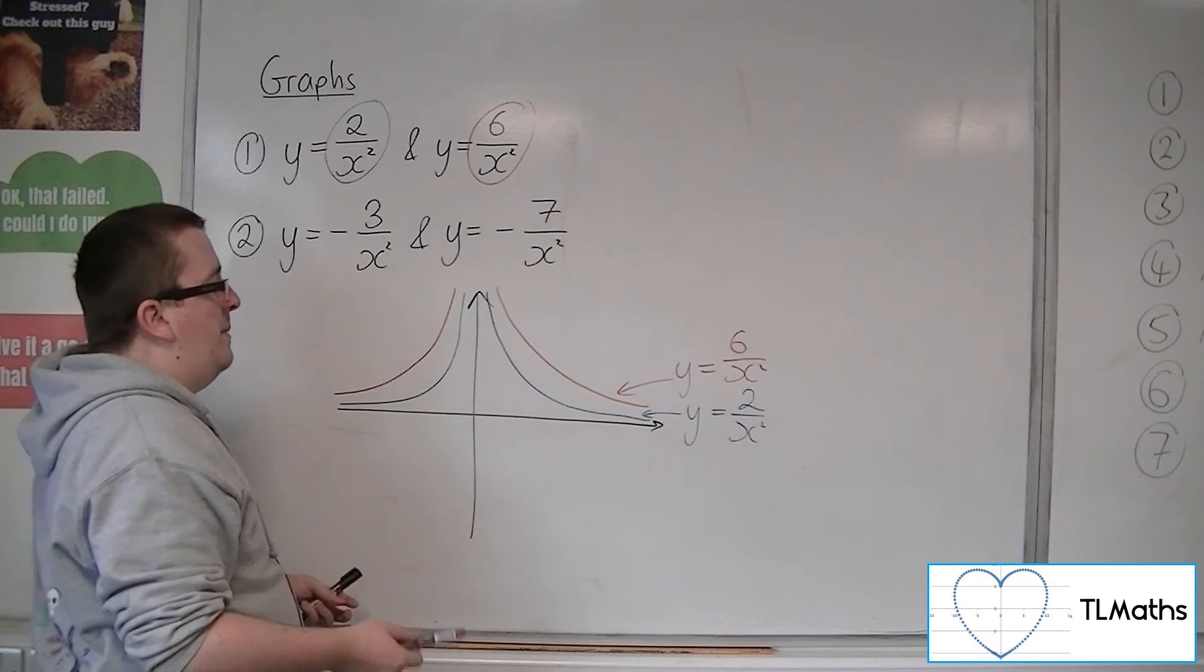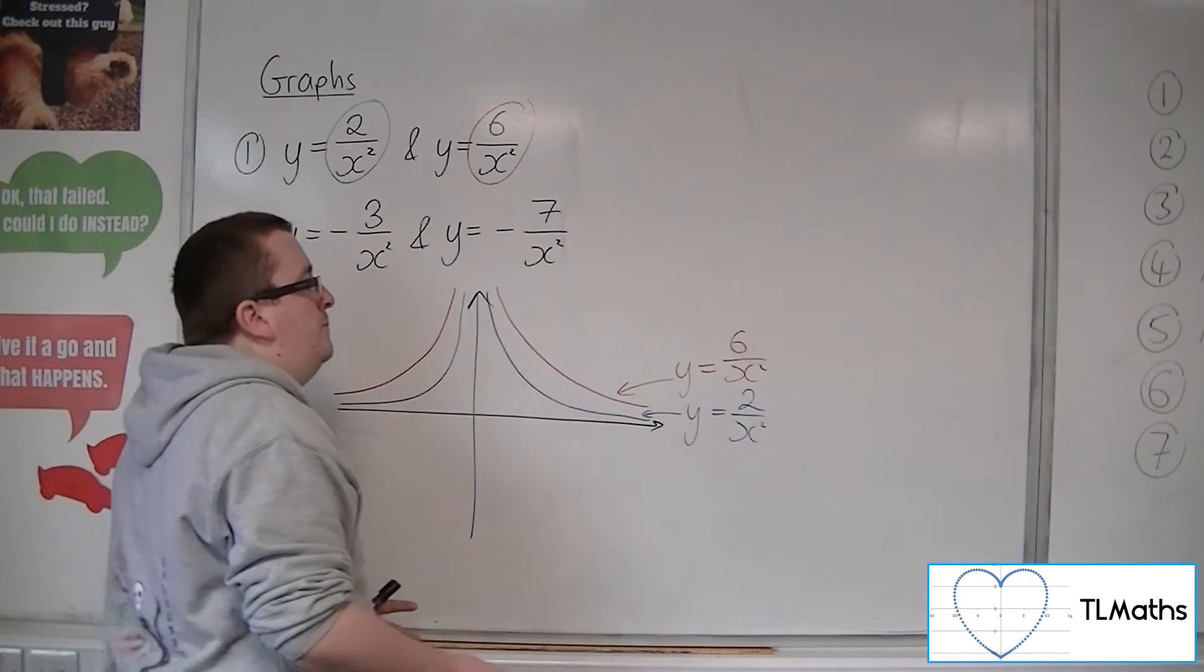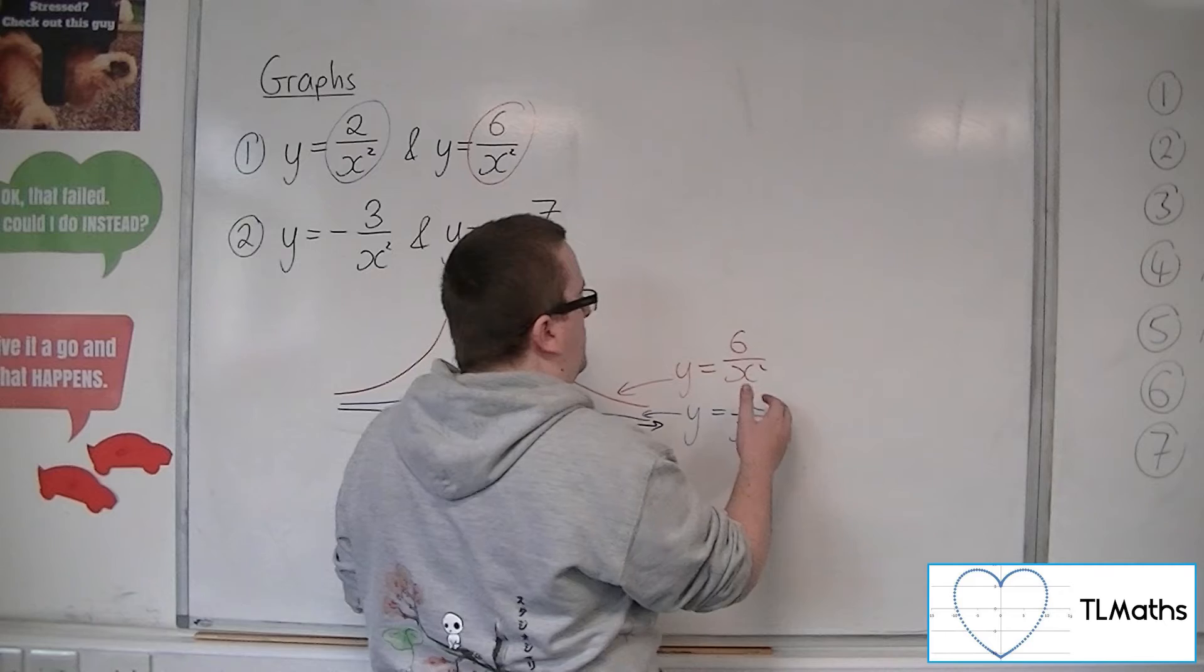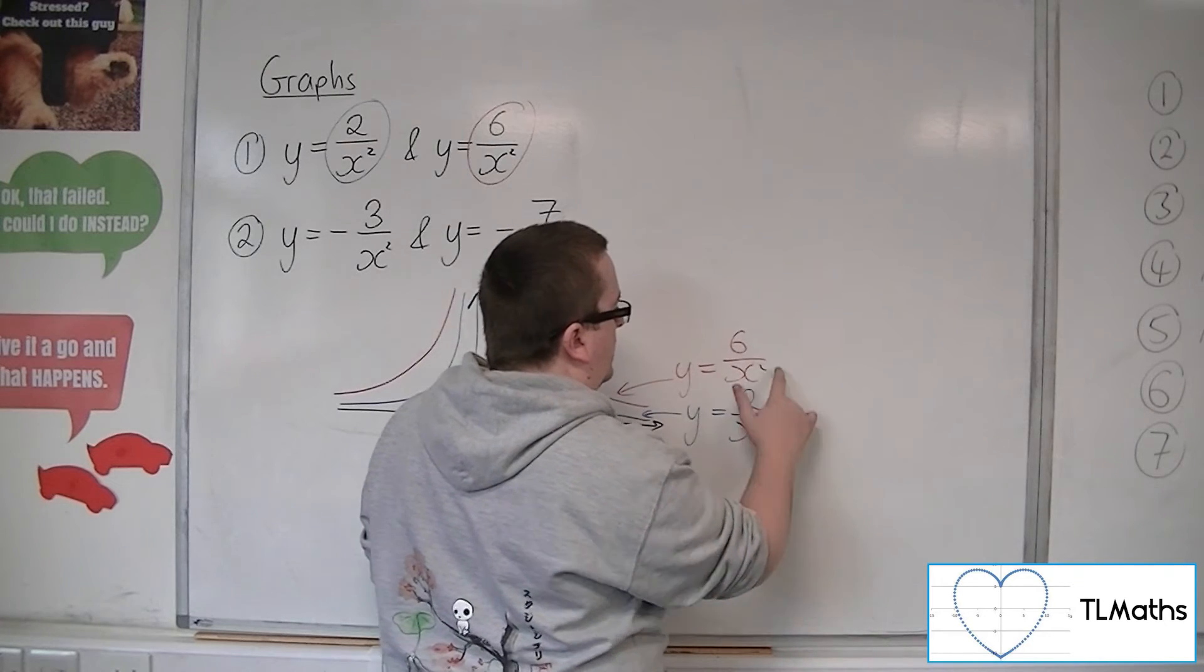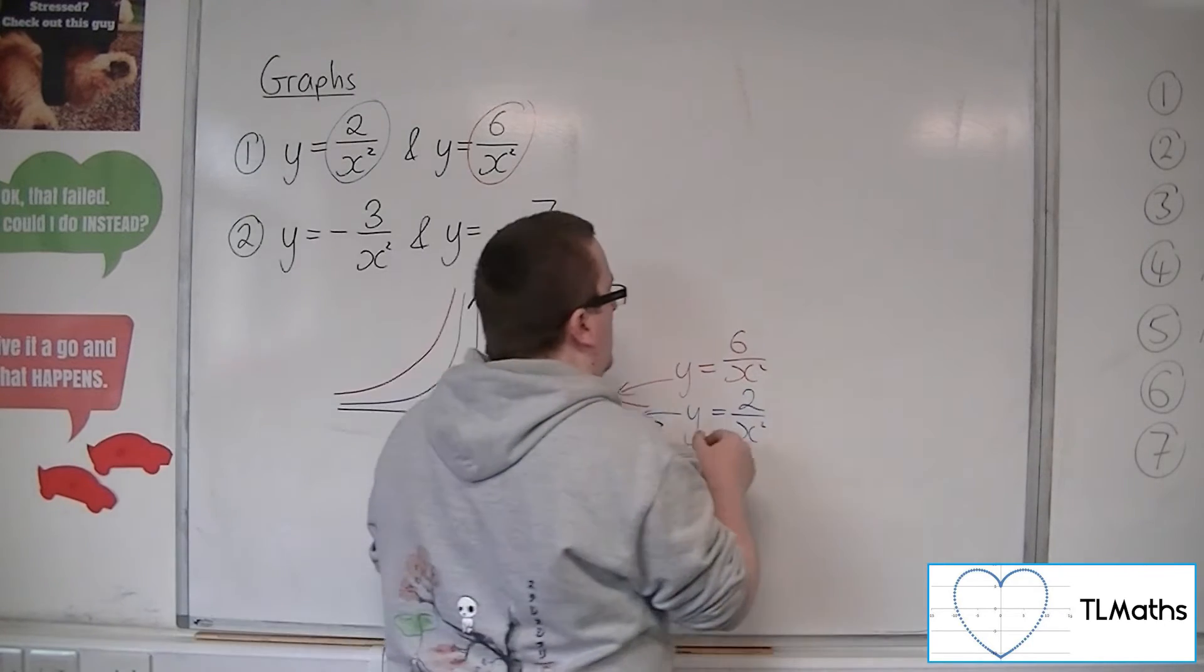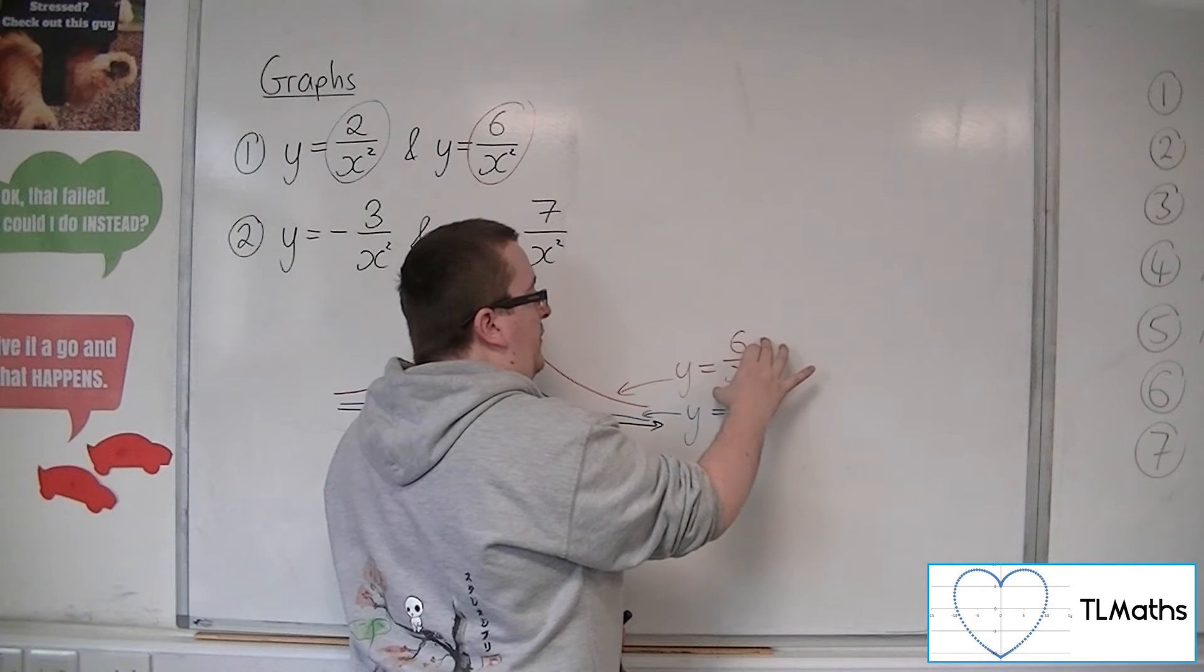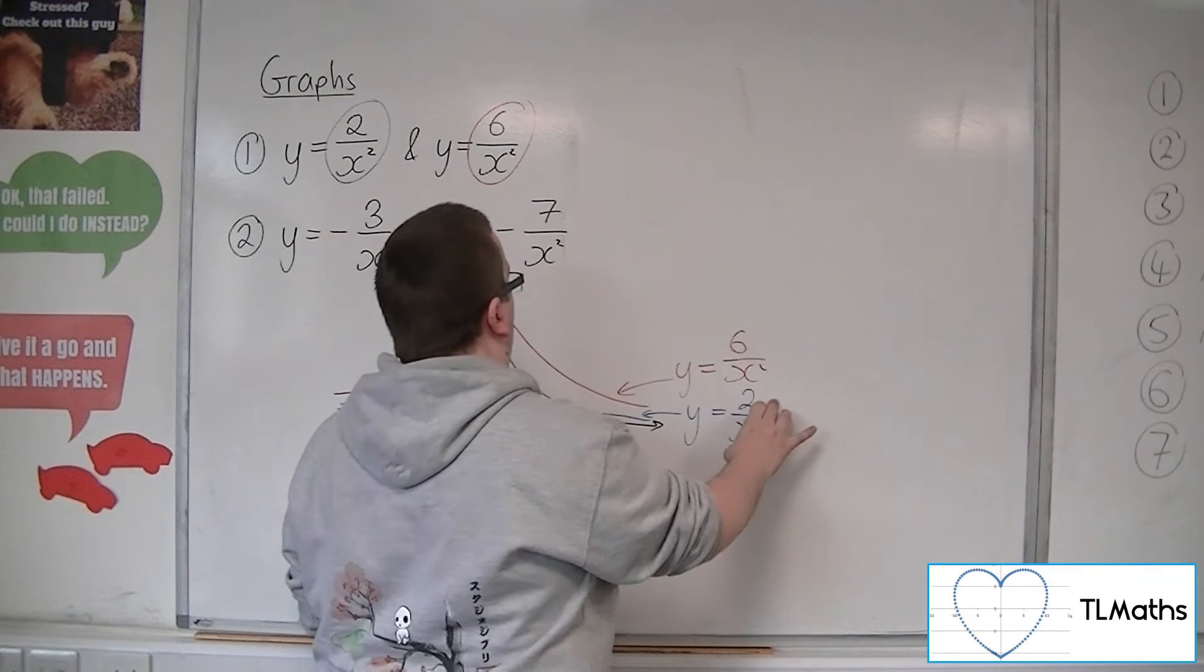So you should also be thinking about, well, it makes sense that it would do that, because although they should be decreasing in a similar rate, when x is 1, for example, this will be at 6, but that will be at 2.